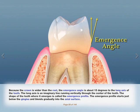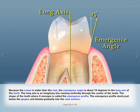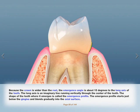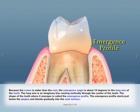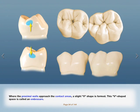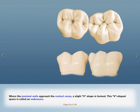Because the crown is wider than the root, the emergence angle is about 15 degrees to the long axis of the tooth. The long axis is an imaginary line running vertically through the center of the tooth. The shape of the tooth where it emerges from the gingiva is called the emergence profile. The emergence profile starts just below the gingiva and blends gradually into the axial surface. Where the proximal walls approach the contact areas, a slight V-shape is formed; this V-shaped space is called an embrasure.